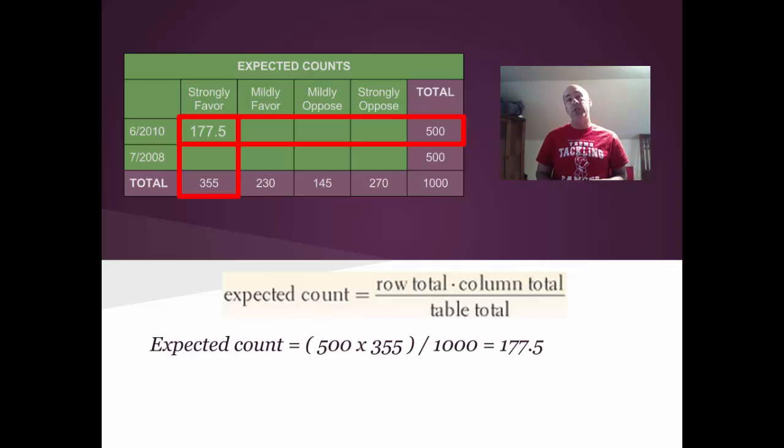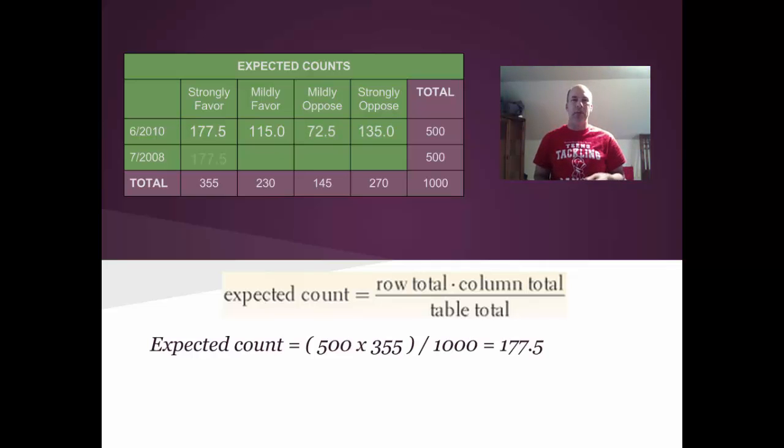So I have eight different cells here that I need expected counts for, and I'll leave the task to you to fill these all out. But you'll notice that for each of them we take the row total times the column total and divide it by the table total. So I have all eight listed here, and one thing you should see is because 2008 and 2010 had the same number of people surveyed, 500, the expected counts for each year are the same. This is what we would expect to occur if the attitudes towards offshore drilling were the same in each year.